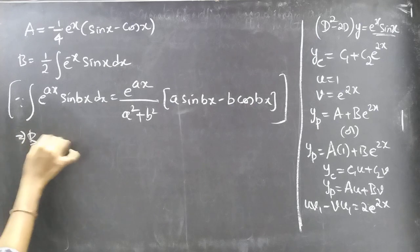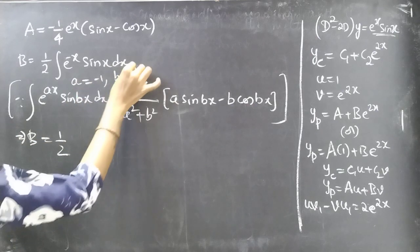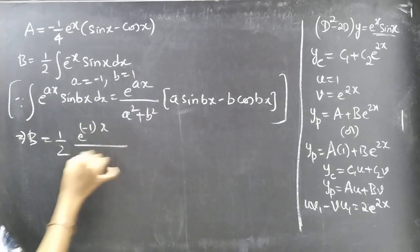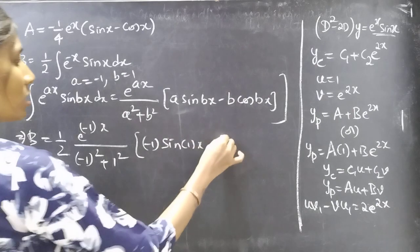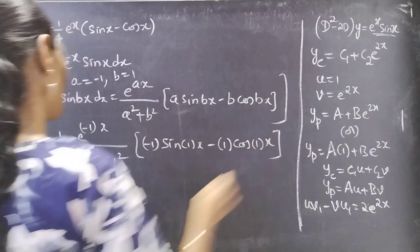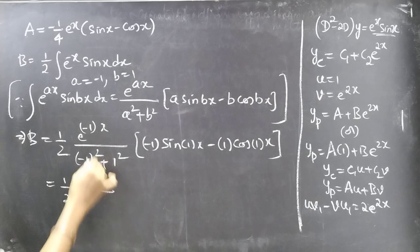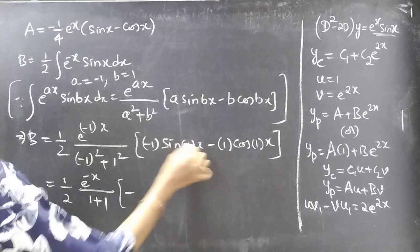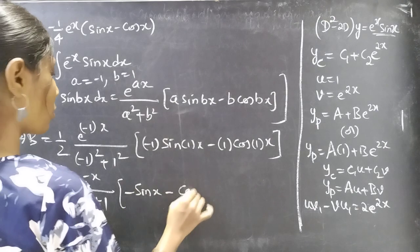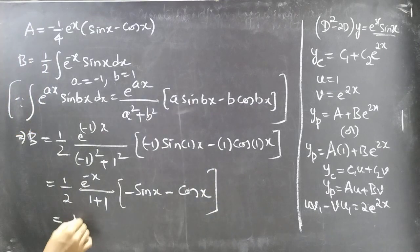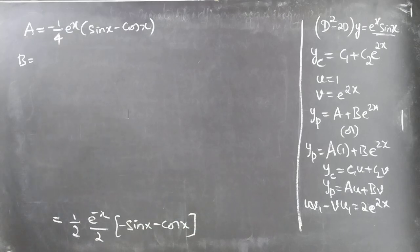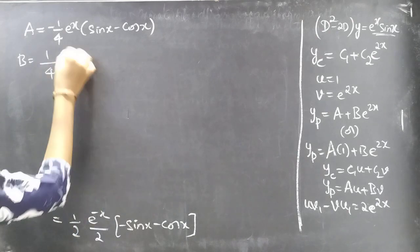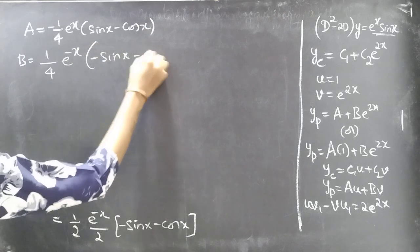So b = 1/2 · [e^(-x) / ((-1)²+1²)] · (-1·sinx - 1·cosx) = 1/2 · [e^(-x) / (1+1)] · (-sinx - cosx) = 1/2 · e^(-x)/2 · (-sinx - cosx) = 1/4 · e^(-x)(-sinx - cosx).